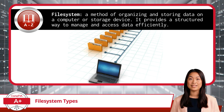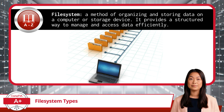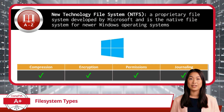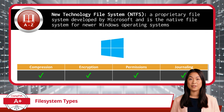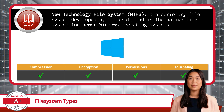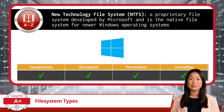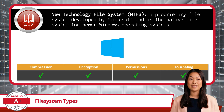Now let's explore some key file system types available for use by the various OS types. First, we have the New Technology File System, abbreviated as NTFS. NTFS is a proprietary file system developed by Microsoft and is the native file system for newer Windows operating systems. It supports advanced features such as file compression and encryption, while also providing robust permissions and access control to files and folders. Additionally, NTFS includes journaling capabilities, which helps maintain file system integrity.